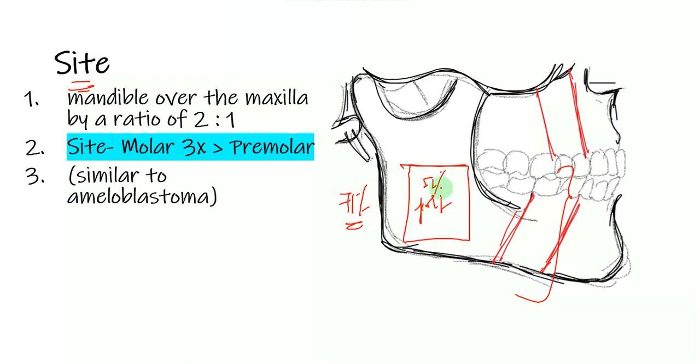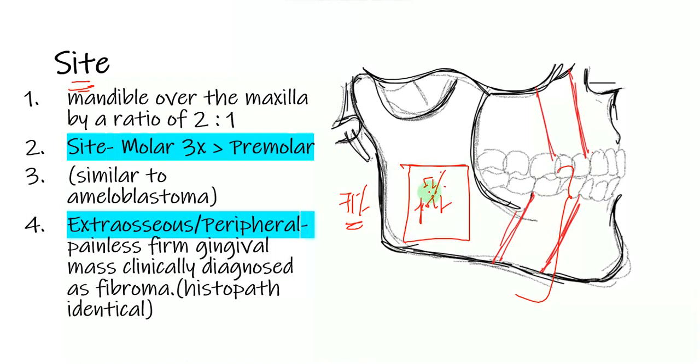It occurs about 71% of the time in the mandible, and even more so in the posterior mandible, about 51% of the time. There is a rare variant which is the extra-osseous or the peripheral, which may be present on the anterior gingiva.